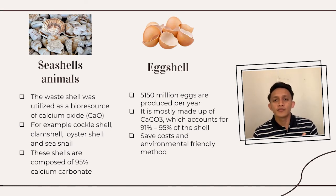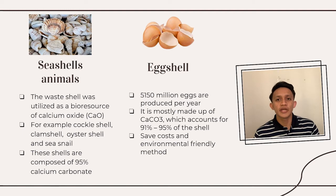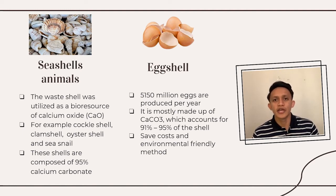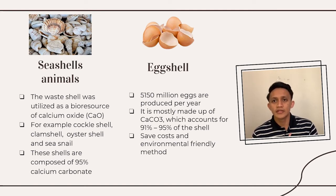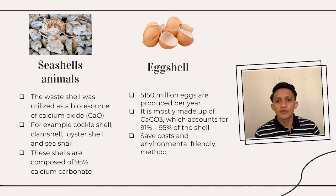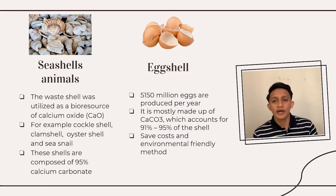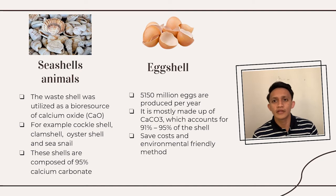The next source is from seashell animals. The waste shell is utilized as a bioresource of calcium oxide. Examples of seashell animals include cockle shell, clam shell, oyster shell, and sea shell. These shells are composed of 95% calcium carbonate. Calcium oxide can be obtained through decomposition by reacting with carbonic acid. However, this method is not convenient as the process requires high cost, and seashell waste is rarely available in large quantities.